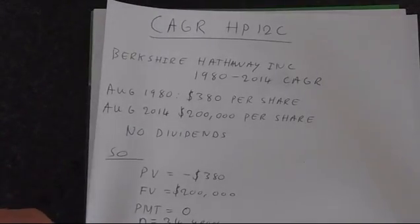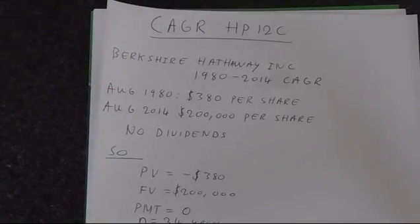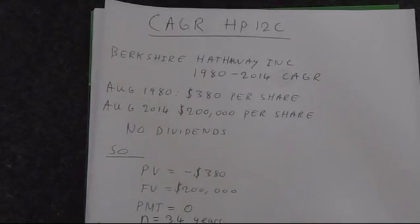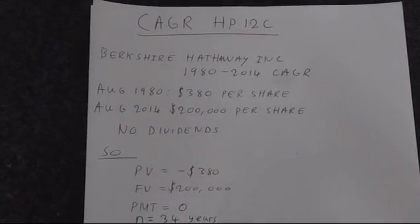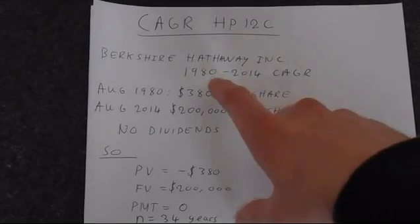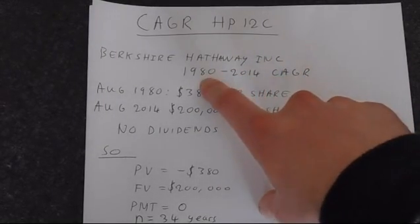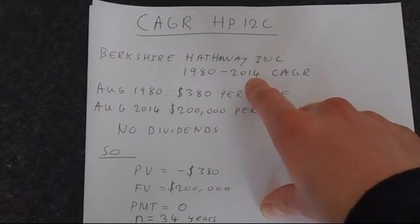Let's look at doing an example. We're going to find the compound annual growth rate of Berkshire Hathaway, which is the company famously associated with Warren Buffett. The track record of the company is quite outstanding. We're going to find the compound annual growth rate between 1980 and 2014.